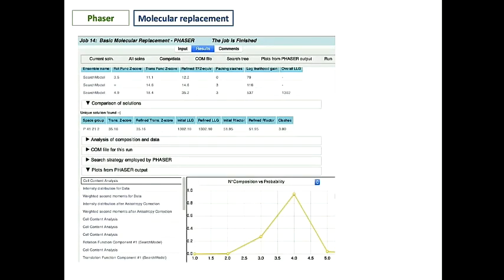We searched again for three copies. It found a solution. Now you can see the clear difference from the output that CCP4i2 is telling you. It even tells you it found a unique solution. But if you miss that, because it's in small letters, if you look at the stats, it actually has a TFZ of over 30 and a log likelihood of over 1,000. So it's very clearly solved it.